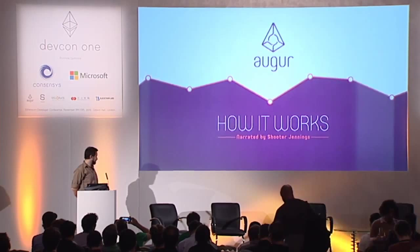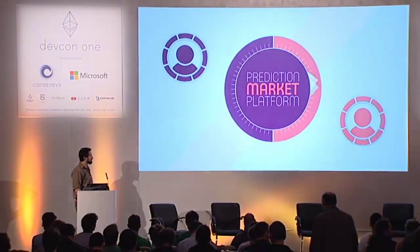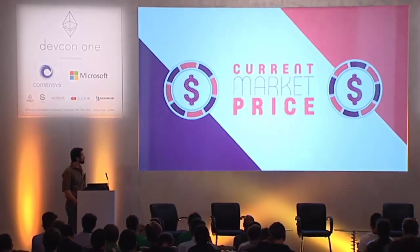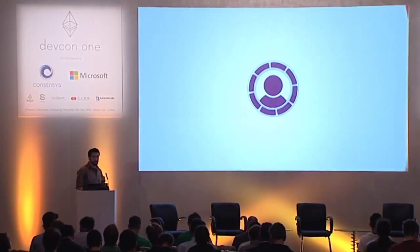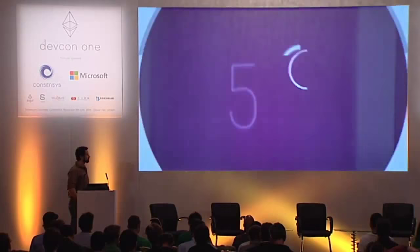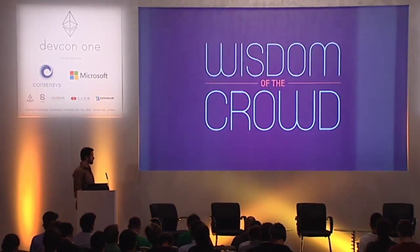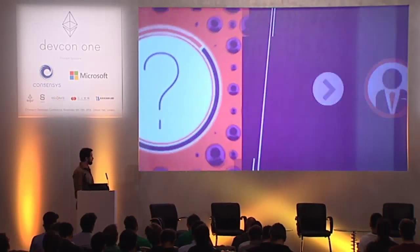Augur is a prediction market platform that rewards a user for correctly predicting future events. Prediction markets allow users to purchase and sell shares in the outcome of an event. The current market price of a share is an estimate of the probability of an event actually occurring. The prices of each share add up to $1, so if you buy a share at even odds it will cost you $0.50. If you end up being right, you'll receive $1 for that share. These markets rely on a scientific principle known as the wisdom of the crowd, which states that a crowd's estimate is usually far more accurate than any expert. This allows us to create one of the most powerful forecasting tools.